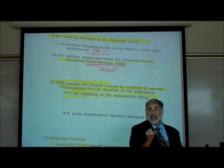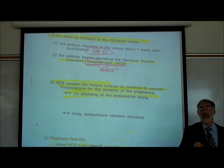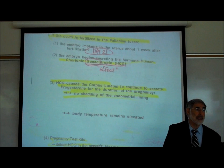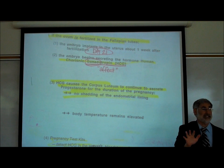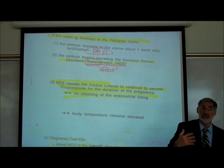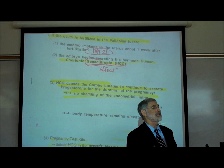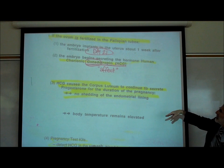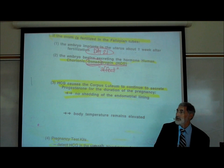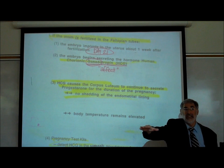Sometimes during pregnancy, women experience spotting — a little bleeding from the vaginal canal. This isn't supposed to happen because shedding can cause loss of pregnancy. If it becomes serious, doctors may give progesterone to maintain the endometrial lining and nourish the embryo. Progesterone is one of the few hormones given during pregnancy to keep the vascularized membrane. As long as the baby is inside releasing HCG, the ovaries keep secreting progesterone, the endometrial lining doesn't shed, and body temperature remains elevated throughout pregnancy.